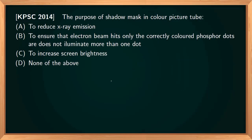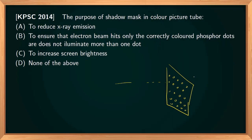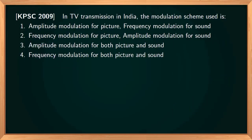The purpose of the shadow mask in a color picture tube: electron beams are passed through a metallic plate with holes in it before reaching the raster. The shadow mask ensures that each electron beam hits only the correctly colored phosphor dot — red, green, or blue — and does not strike more than one dot. The correct option is to ensure the electron beam hits only the correctly colored phosphor dot.